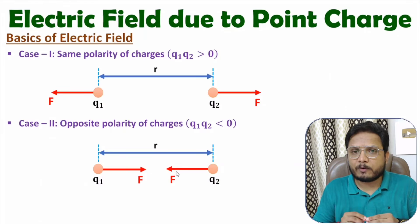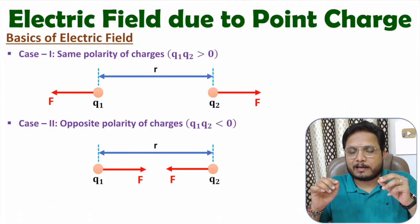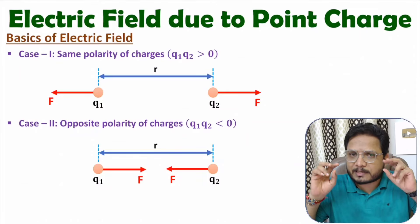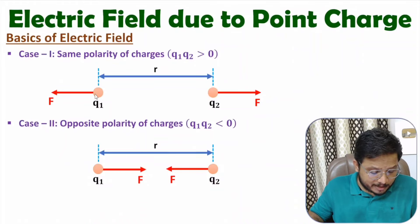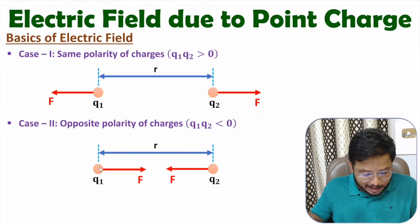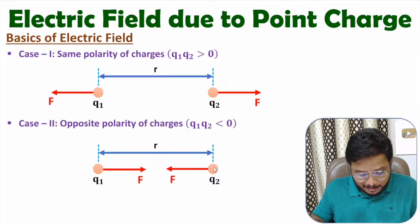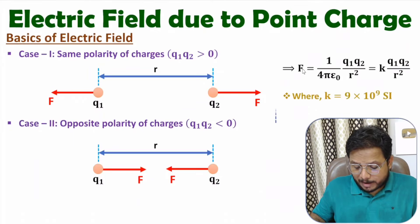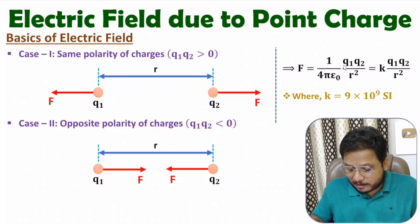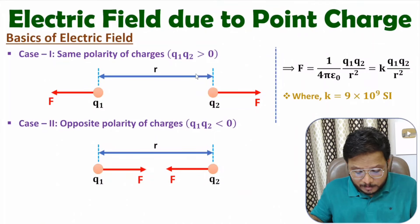So if we have like polarity — meaning both charges are positive or both charges are negative — we will have repulsive force between the charges. And if we have unlike polarity, meaning opposite polarity where one charge is positive and another is negative, there will be attractive force. As per Coulomb's law, magnitude of force is directly proportional to Q1 times Q2 and inversely proportional to square of distance between them.